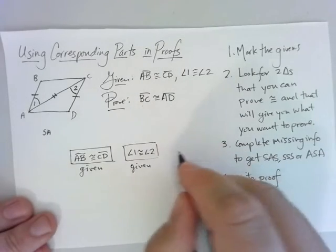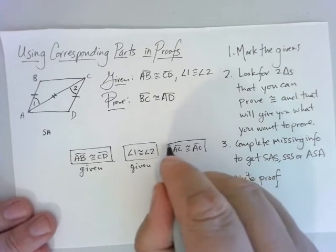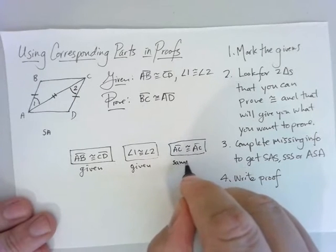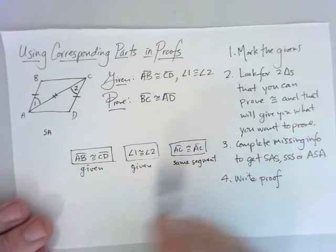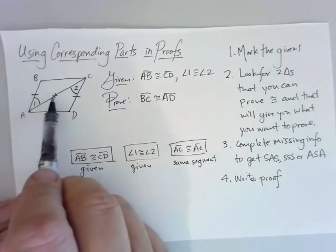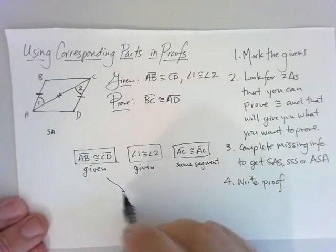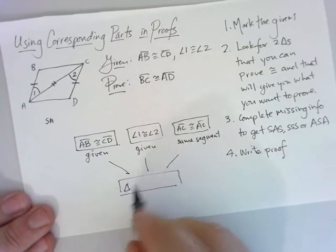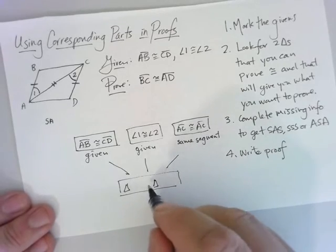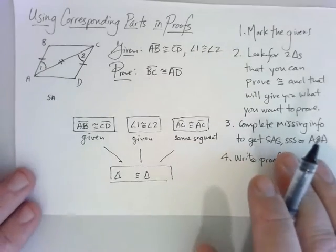My last pair of sides is the shared segment: AC is congruent to AC — everything is always congruent to itself. So this is my side-angle-side pattern. Given those three things — side, angle, side — that is enough information to deduce that the triangles have to be congruent.